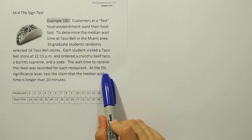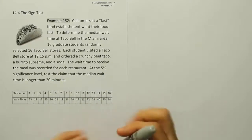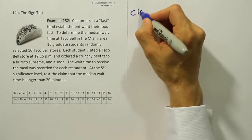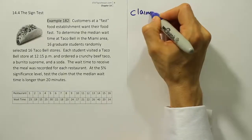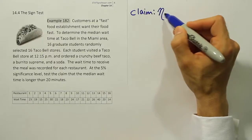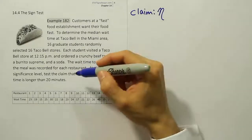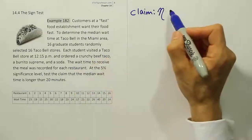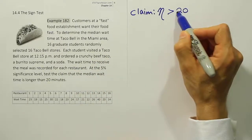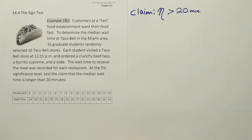It's clearly a hypothesis test. It says test the claim that the median — now the symbol for median is going to be a little different than we've ever used before because we're looking at the population symbol for median. It's actually the Greek symbol eta, which looks like a fancy N. We're saying that the median should be greater than 20 minutes. So that's our claim.